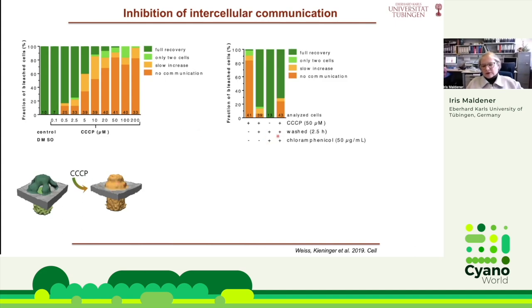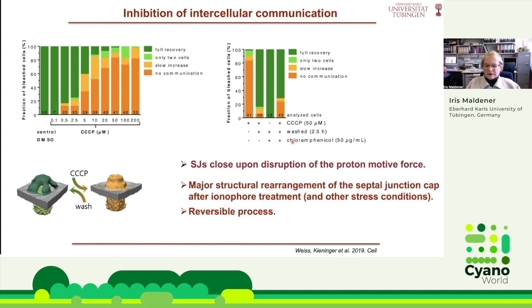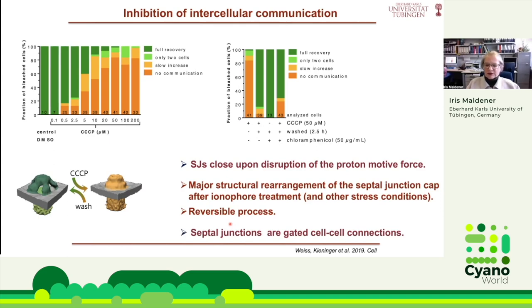Anne-Kathrin washed the filaments after CCCP treatment and could see that they could open again. This reopening was independent from protein biosynthesis, as shown using chloramphenicol. So septal junctions close upon disruption of the proton motive force, with a major structural rearrangement occurring. The ionophore treatment was not the only stress — other stress conditions like oxidative stress and darkness also lead to closing of the septal junctions. But they could open again after stress was gone, showing it is a reversible process. Therefore, we could say that septal junctions are gated cell-cell connections.